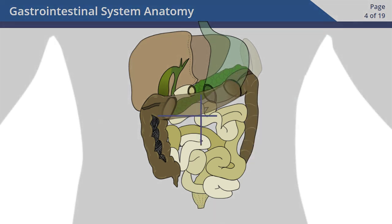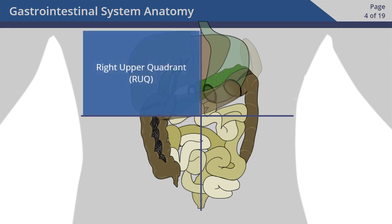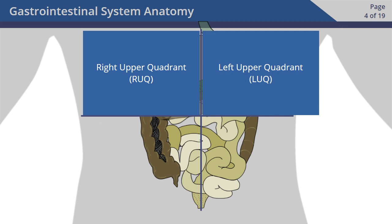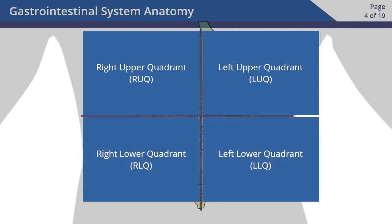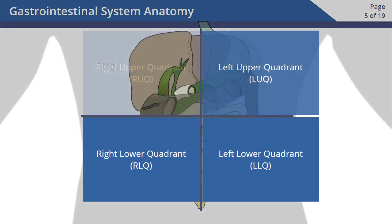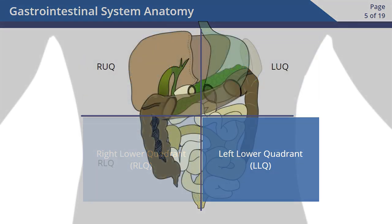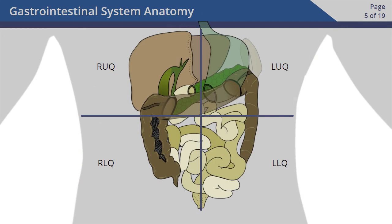The abdomen is divided into four quadrants: the right upper quadrant, the left upper quadrant, the right lower quadrant, and the left lower quadrant. Now let's take a closer look at what's in each quadrant and how each organ helps your body break down food into the water, minerals, and nutrients your body needs.